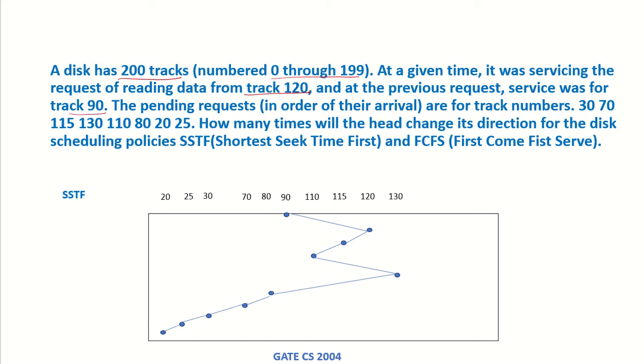The pending requests in order of their arrival are for track numbers 30, 70, 115, 130, 110, 80, 20, and 25. How many times will the head change its direction for the disk scheduling policies shortest seek time first (SSTF) and FCFS (first come first serve)?